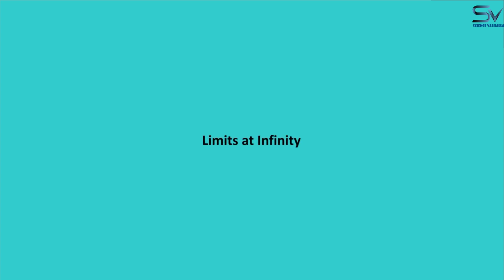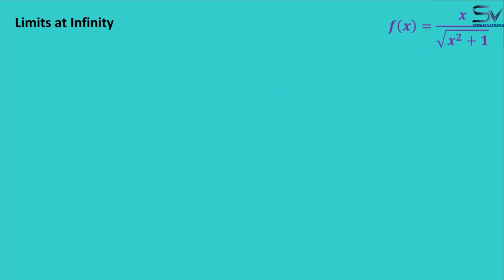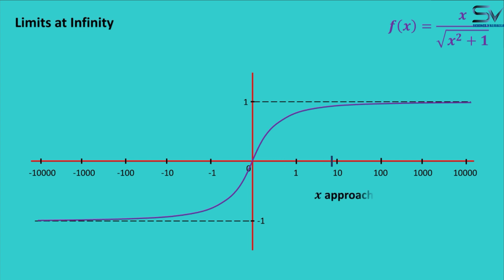Let's start with limits at infinity. This is a function we have and you can see its graph. Limits at infinity mean that as x becomes an arbitrarily large number, whether it is negative or positive, then what will be the limit of the function? We call this the limit at infinity.